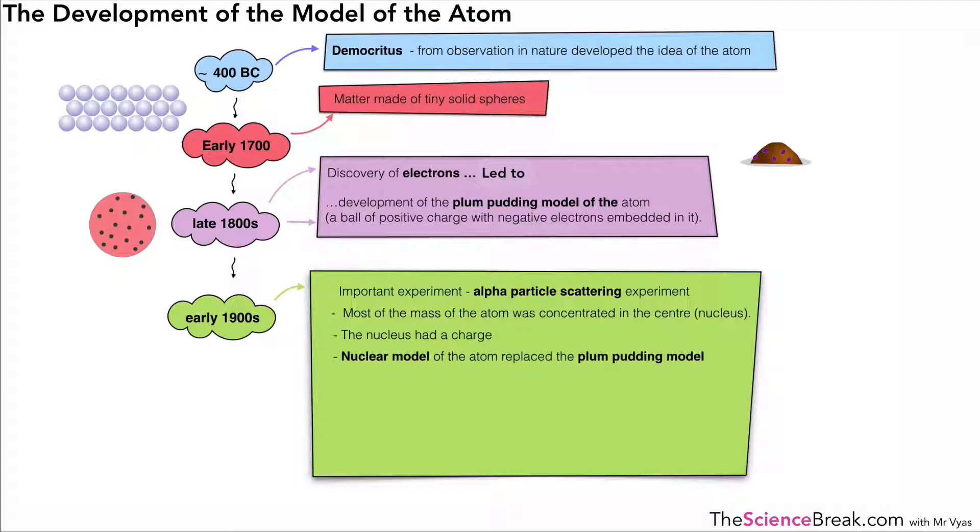This led to a new model of the atom called the nuclear model and it replaced the plum pudding model. This is an important example of how new evidence can change theories and ideas. A little while later, a scientist called Niels Bohr made some mathematical calculations about electrons and he suggested that they orbit the nucleus at different distances. Afterwards, experimental observations confirmed this idea.